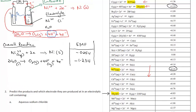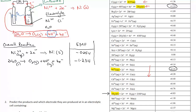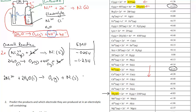To find the overall cell reaction, we combine the two half equations. We multiply the cathode equation by 2 to balance the electrons: 2Ni²⁺ + 4e⁻ → 2Ni(s). Adding the anode equation, the four electrons cancel, giving the overall reaction: 2Ni²⁺(aq) + 2H₂O(l) → 2Ni(s) + O₂(g) + 4H⁺(aq).